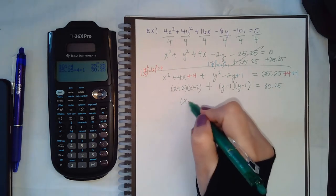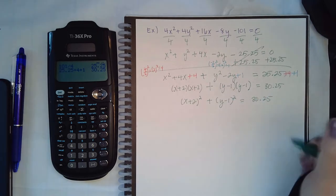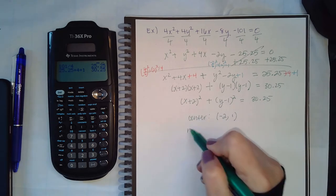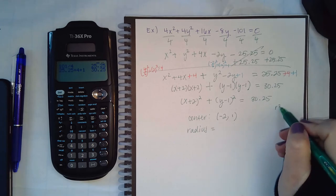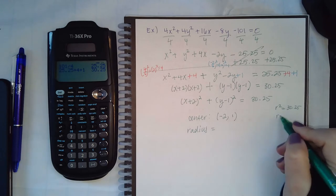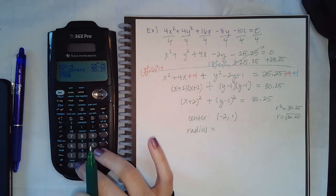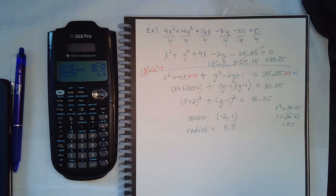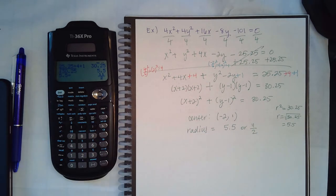So I get x plus 2 squared plus y minus 1 squared equals 30.25. The center is negative 2, positive 1 (using opposite signs). The radius requires taking the square root of 30.25; since this is a distance we only need the positive root, giving r equals 5.5. As a fraction, 5.5 is equivalent to 11 over 2.